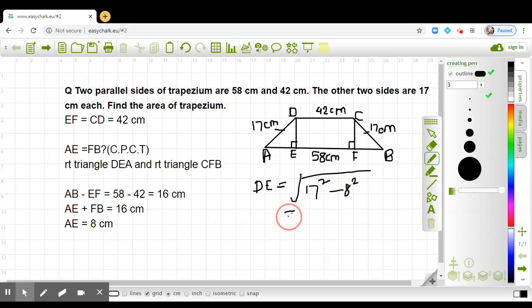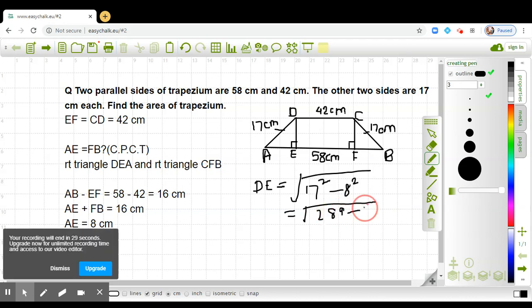Quickly solve this. What is 17 squared? It is 289. And what is 8 squared? It is 64. So it is the square root of 225. We get DE to be 15 cm.